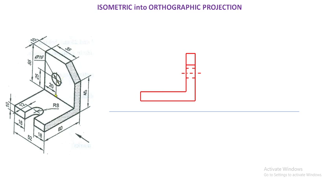This hole is invisible, and as an observer standing here he may not see this entire arc. This arc has to be shown by means of a hidden line. What is the distance of this hidden line of this arc? 12mm. You can see this is 12mm, and 12 plus the radius 8 equals 20, so you have to take 20mm from here to draw the hidden portion of this arc.